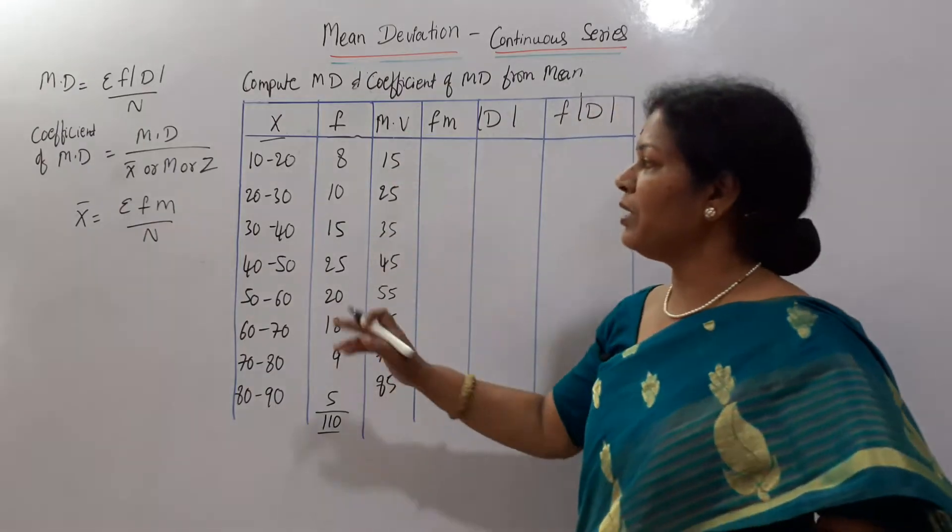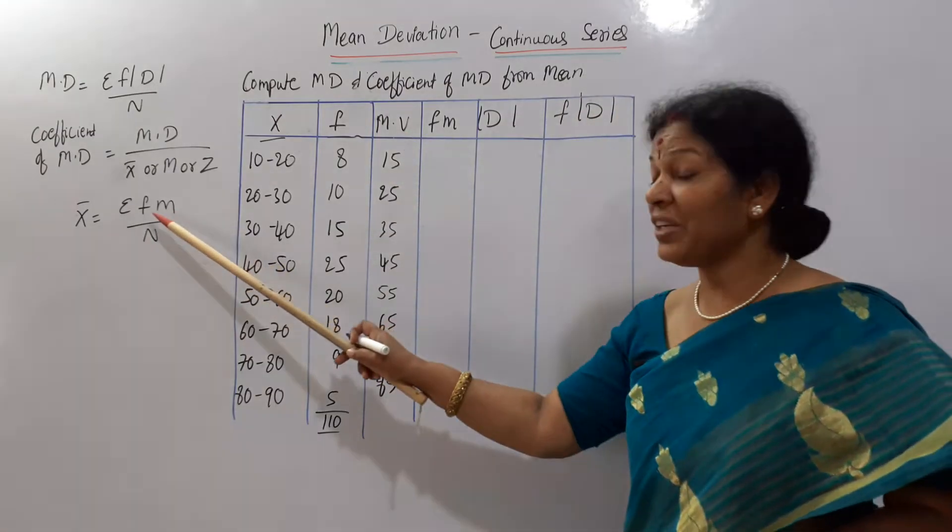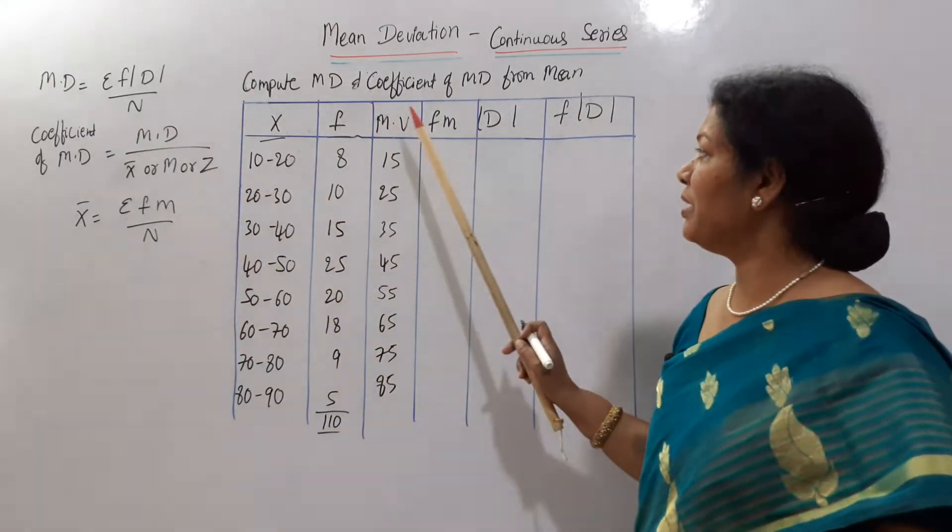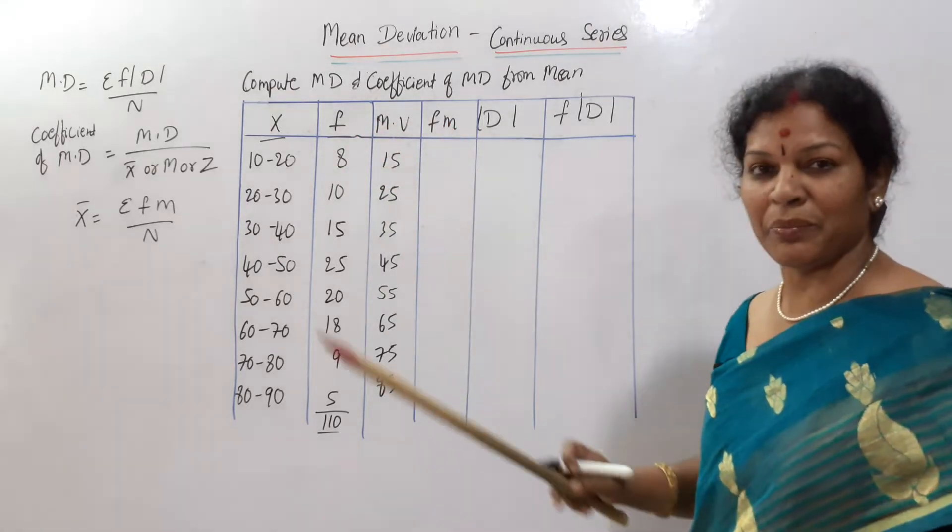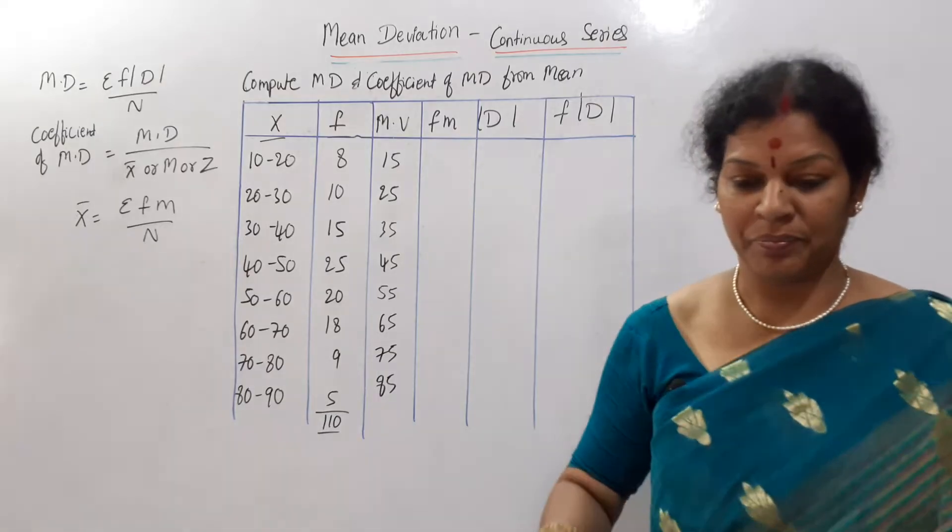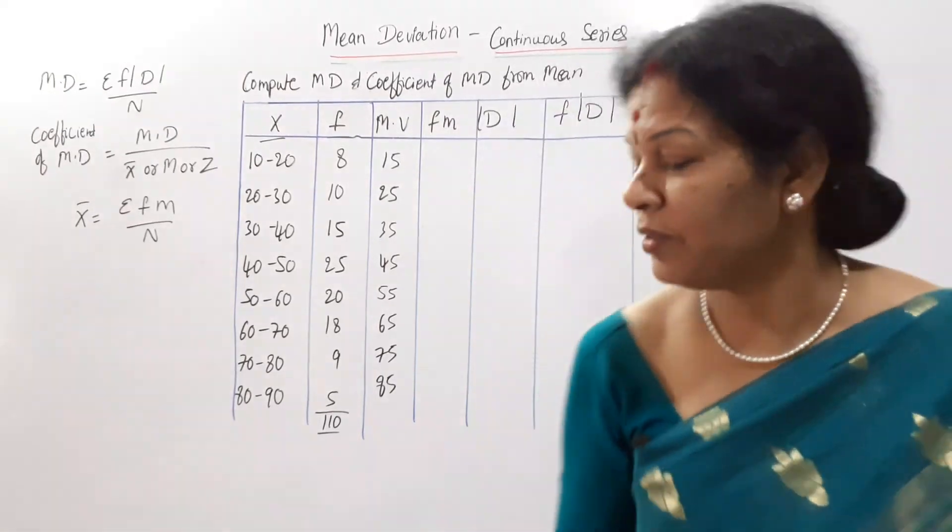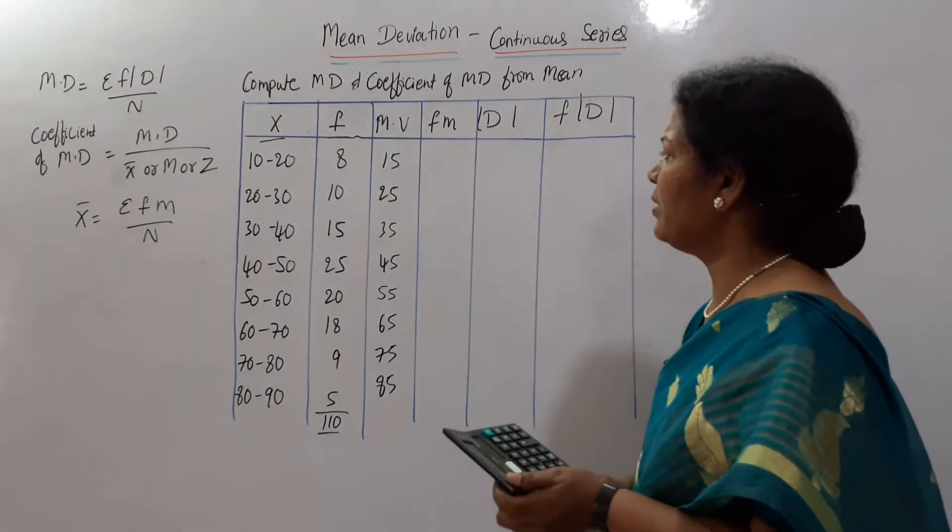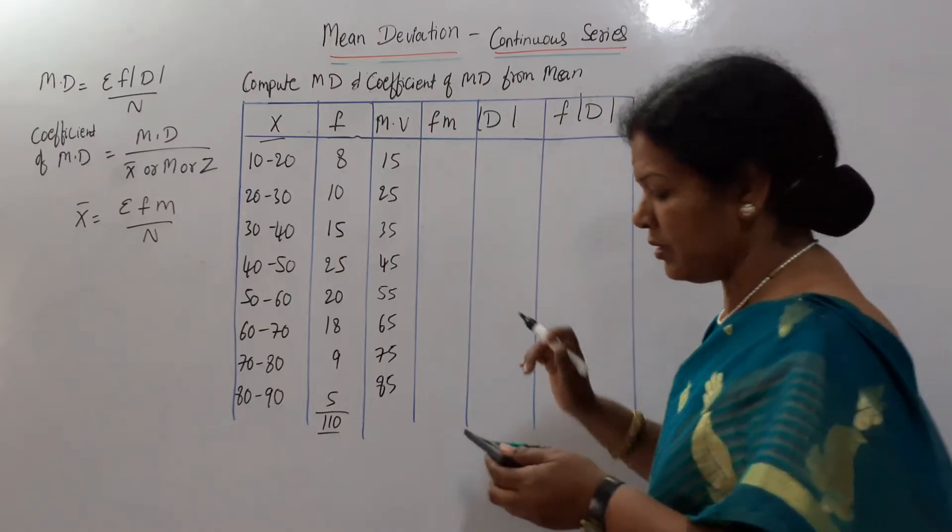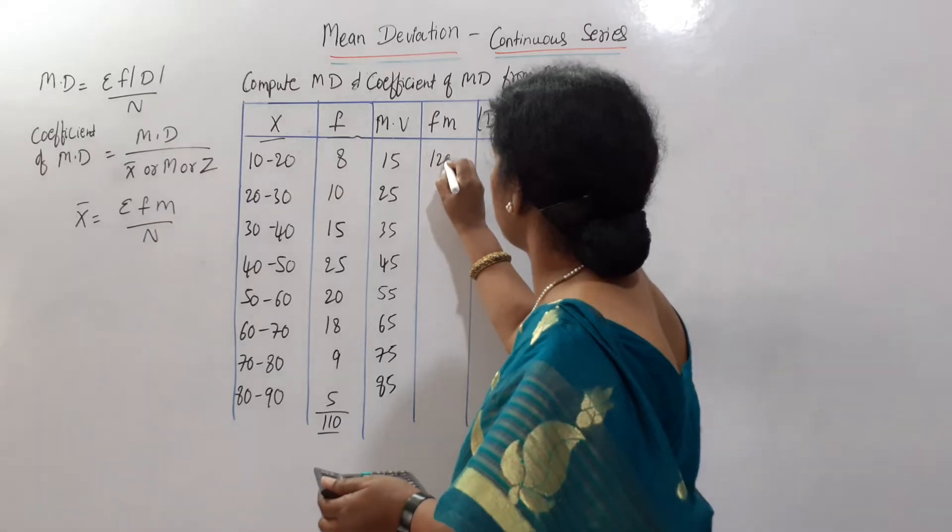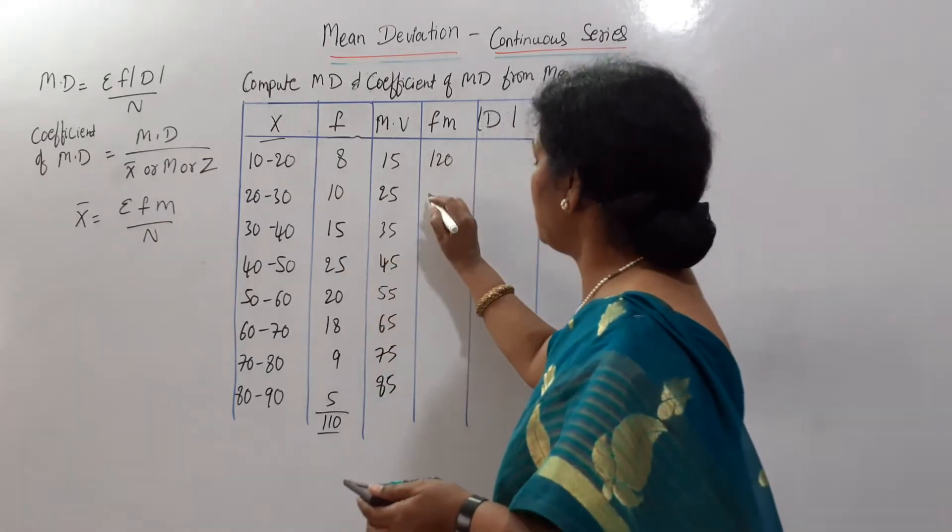Once if you get mid value, then as per the formula, frequency into mid value, f into m. This multiplication we want. So I have provided one column fm. We will use the calculator. 8 into 15, 120. Then 10 into 20, 250.